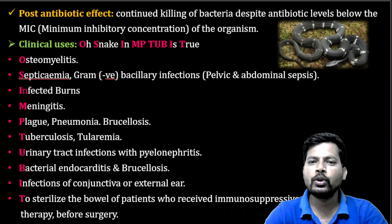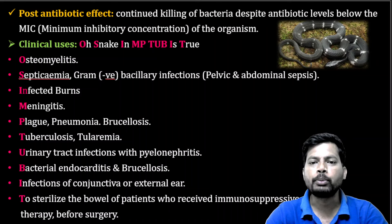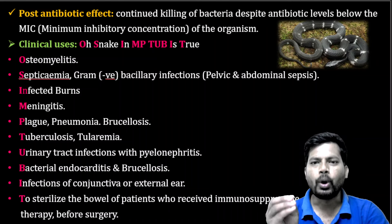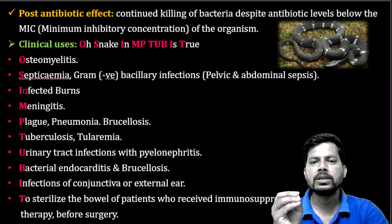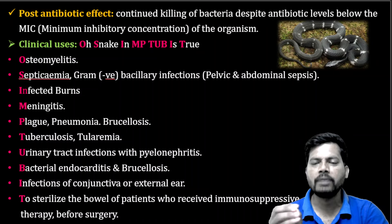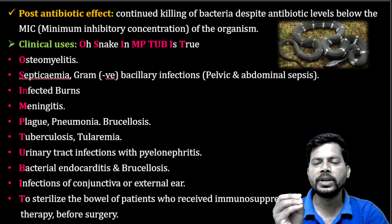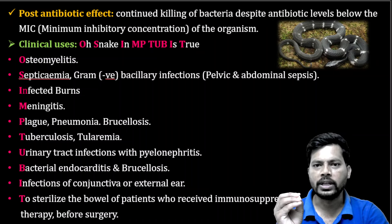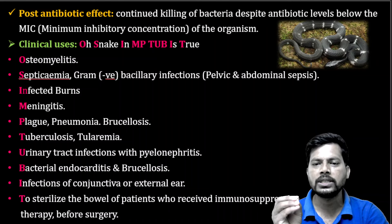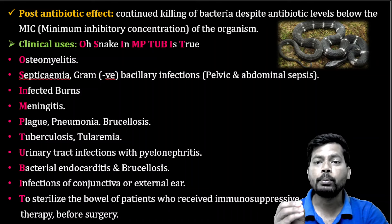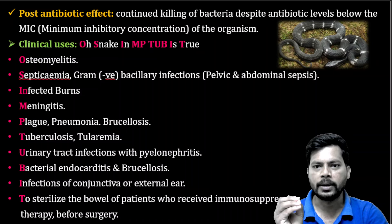Aminoglycosides are antibiotics that inhibit protein synthesis in the bacterium, and especially these are polycationic in nature. Because of this polycationic nature, these drugs are not preferred by oral route — they should be taken by parenteral route only. They are ionized in nature, having poor absorption and distribution, which is why the parenteral route is preferred.